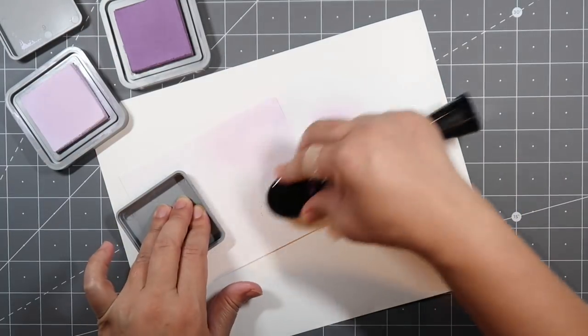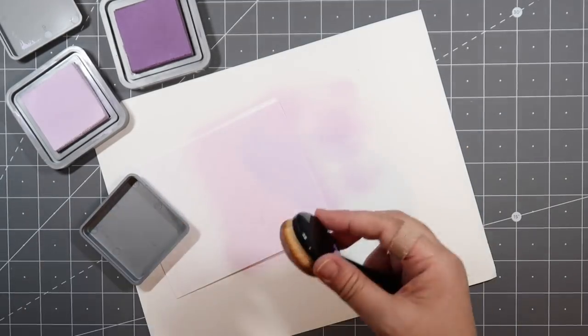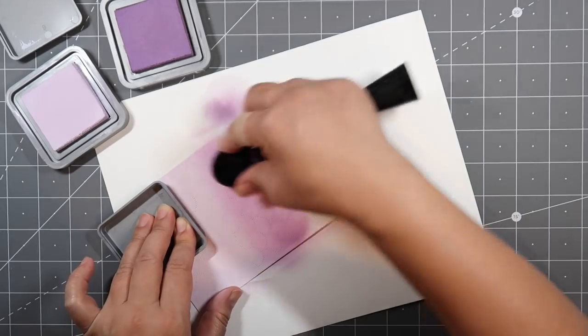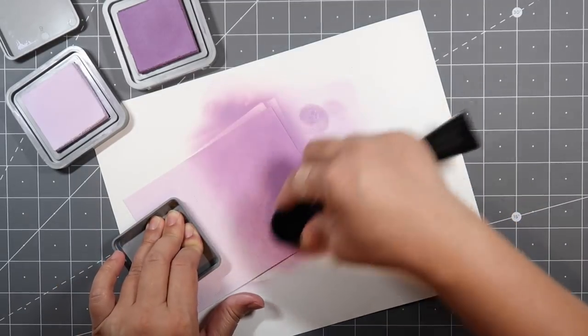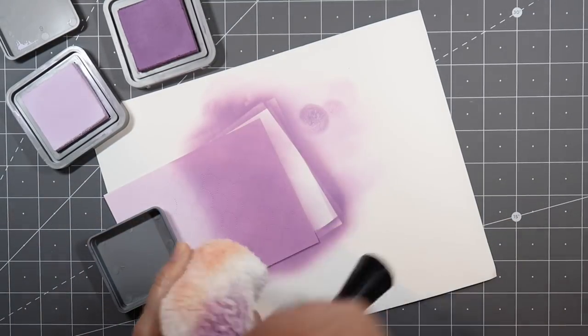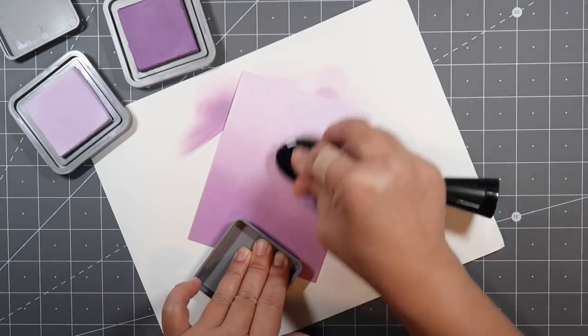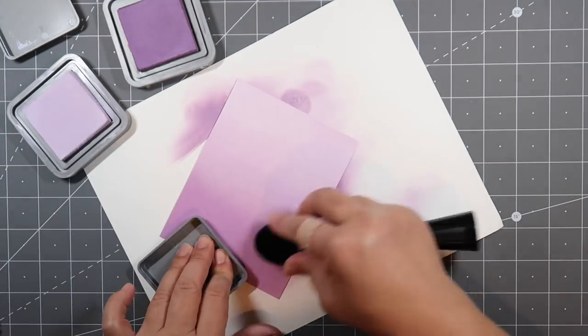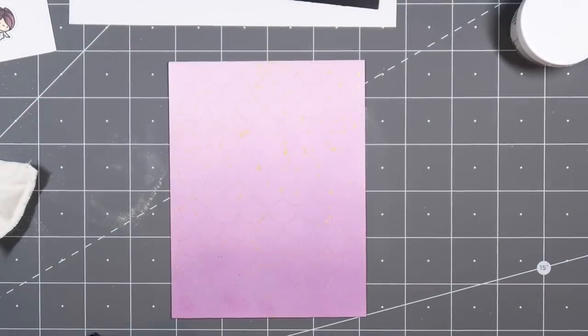So let's start with the second card. I'm using the Distress Oxide inks in Dusty Concord and Milled Lavender. I did cut out that Scales Cover die again because I really liked pairing that with the mermaids. I'm using Bristol Smooth cardstock here and it is so easy to ink blend the oxides on the Bristol Smooth paper because the ink stays really wet and you have a long time to blend your colors together and make it just look seamless.